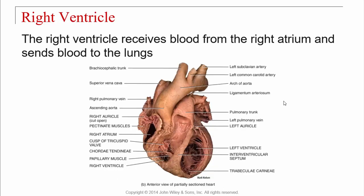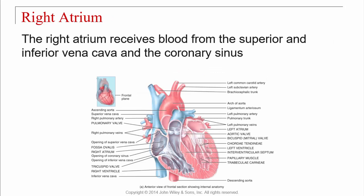Here we've opened up the right atrium and can see the openings for the superior and inferior vena cava and the opening for the coronary sinus. Then we have a valve — the tricuspid valve. A cusp is a flap; this valve happens to have three flaps, so it's the tricuspid valve.